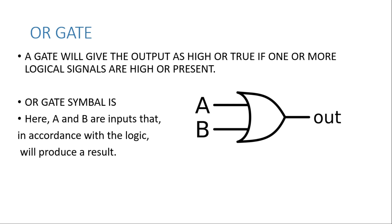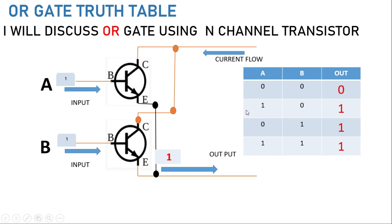OR gate: the OR gate will give the output as high or true if any one or more logical signals are high or present. It contains two inputs. In case any one of two, three, or four inputs is high, then the output will be high or true. This is the symbol of the OR gate. Now I will show you how it gives the output.